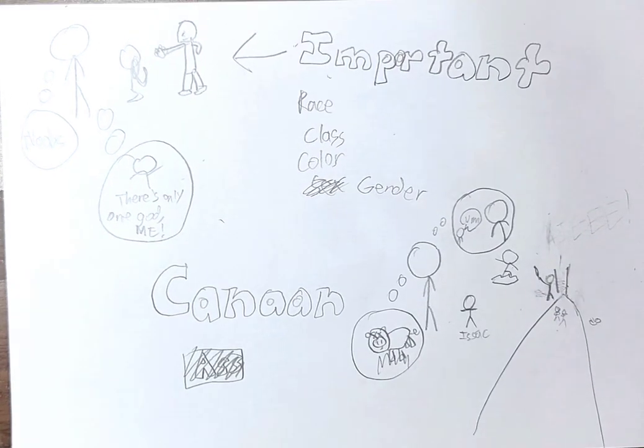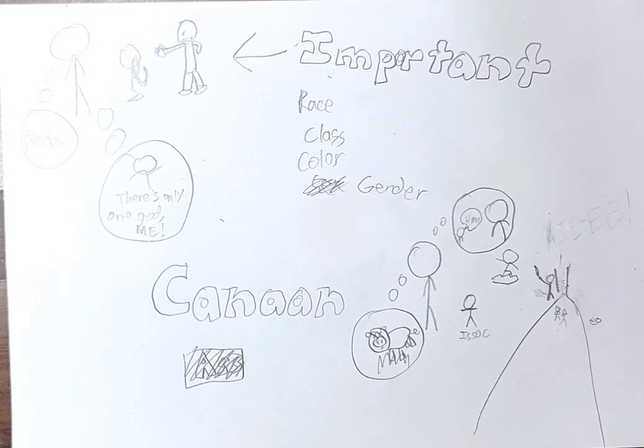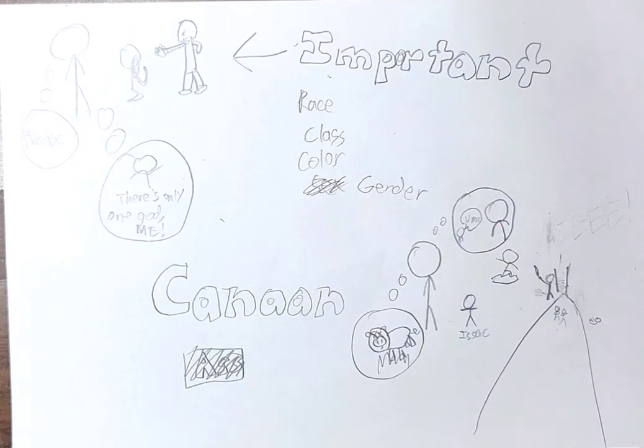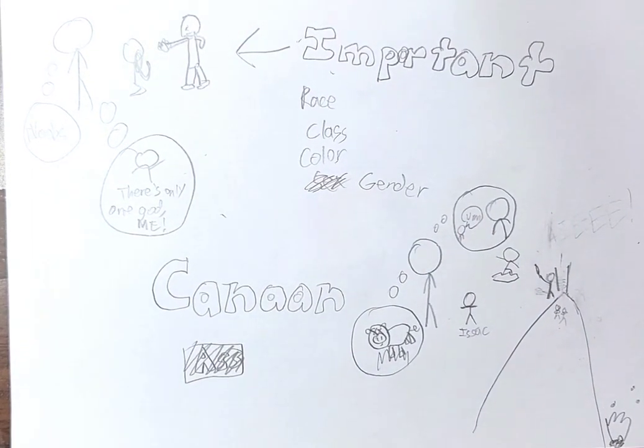Genesis doesn't tell us about how Isaac was feeling during this time, but it's not really hard to imagine. I like to think he was very terrified, so that he fainted off the mountain after he was released and landed on some cotton which saved him. This isn't confirmed, but that's what I like to think.